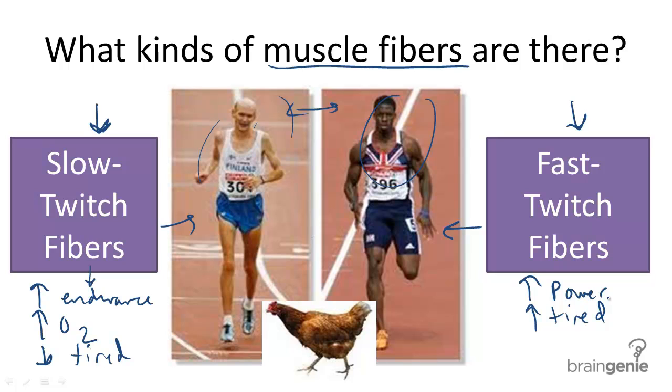These are the muscles found in the white meat of a chicken's breast. That's actually the difference between the white meat and the dark meat of a chicken.